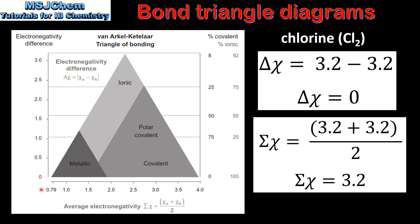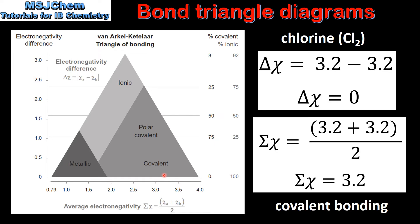Next we use the bond triangle diagram to determine the type of bonding in chlorine. On the y-axis we have the difference in electronegativity between the two atoms, and on the x-axis we have the average electronegativity. So on the y-axis we have zero and on the x-axis we have 3.2. This tells us that the type of bonding in chlorine is covalent.